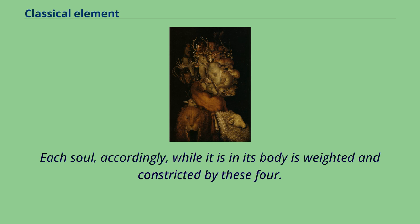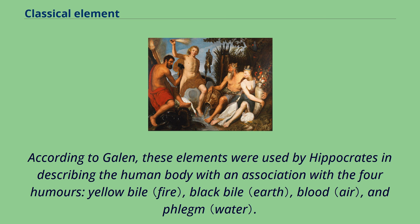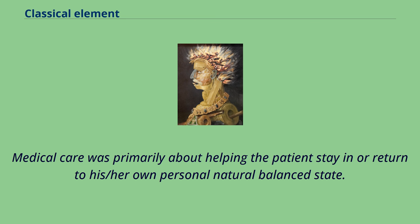According to Galen, these elements were used by Hippocrates in describing the human body with an association with the four humors: yellow bile, black bile, blood, and phlegm. Medical care was primarily about helping the patient stay in or return to his or her own personal natural balance state.